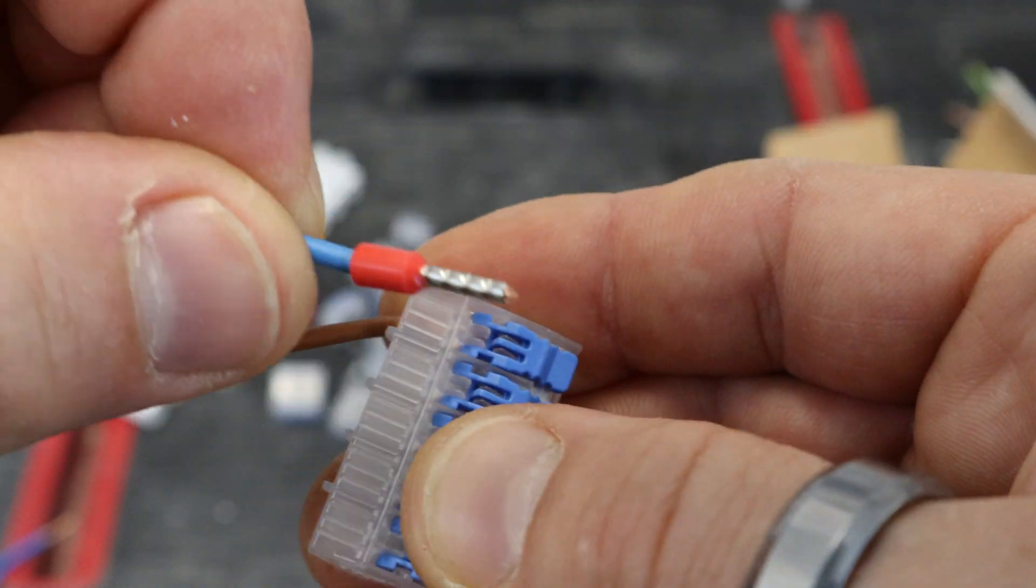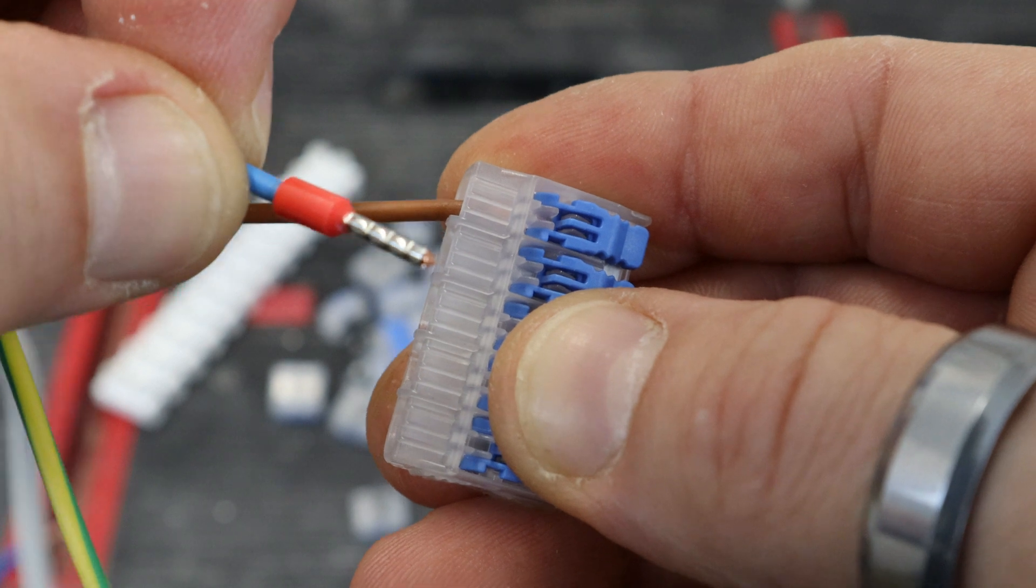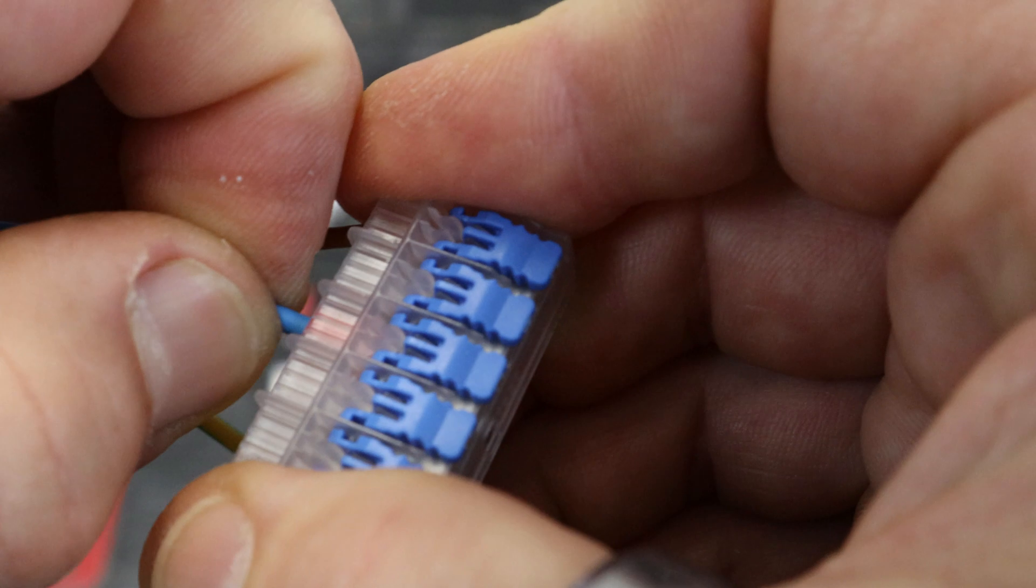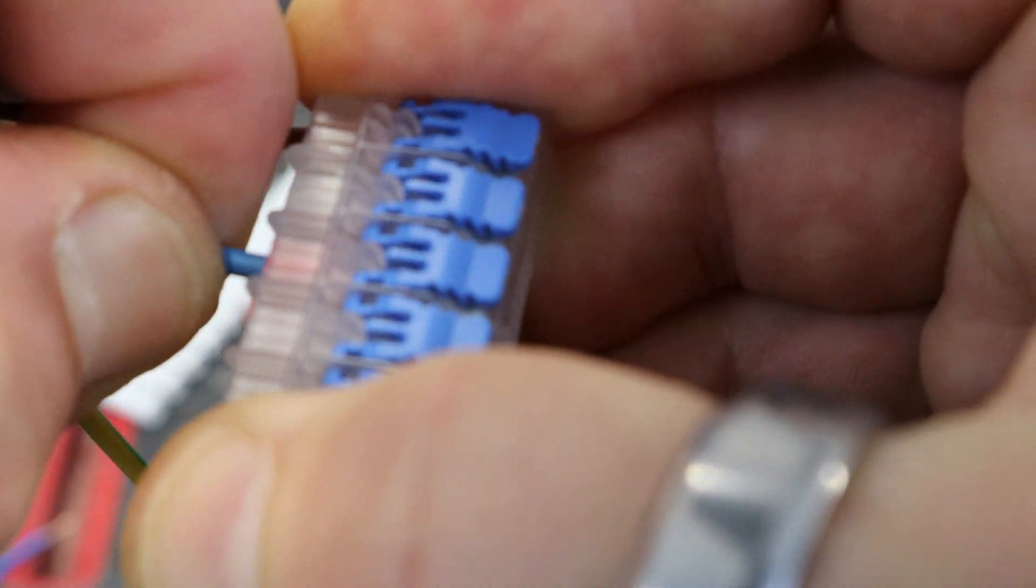And just as an example I thought I'd put a boot lace ferrule on the other end of the flex and that will just push straight in like it would do if it was solid core. Really good grip on that.